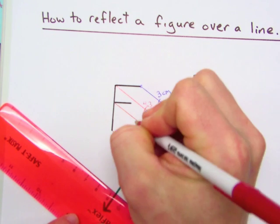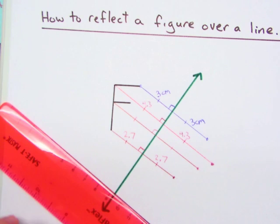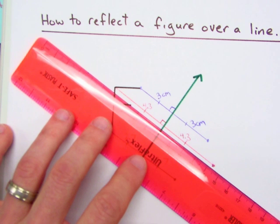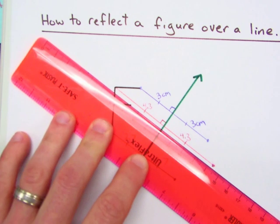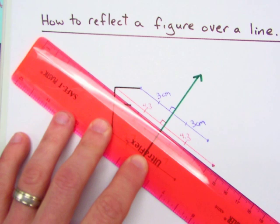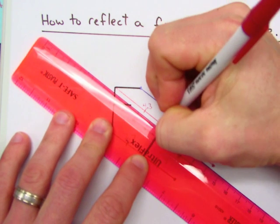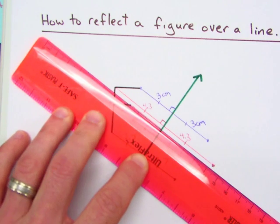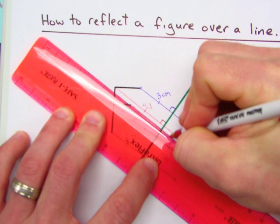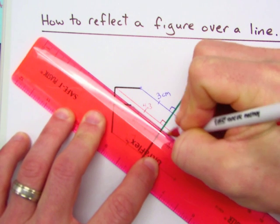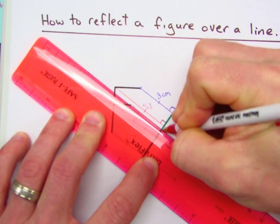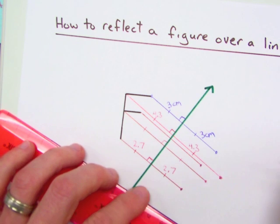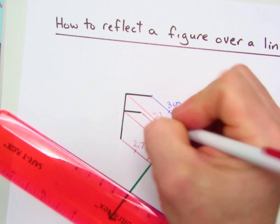And again, we have perpendicular bisector. And then one last point here. Line it up perpendicular. Take the measurement. Make the congruent part on the other side.